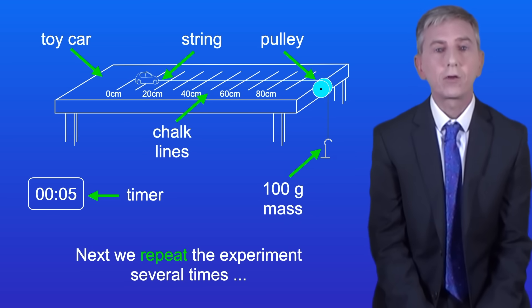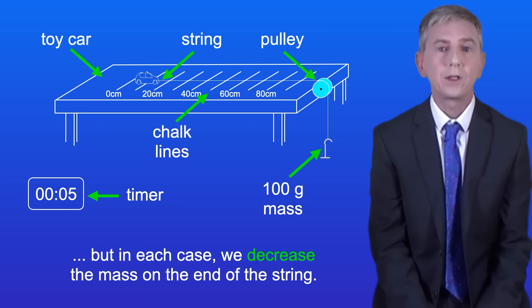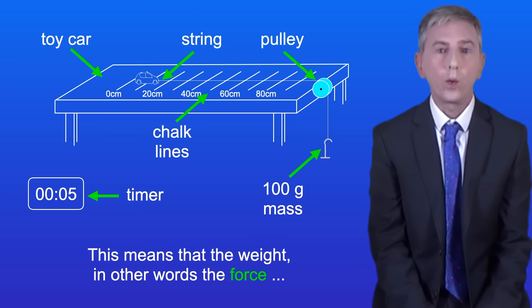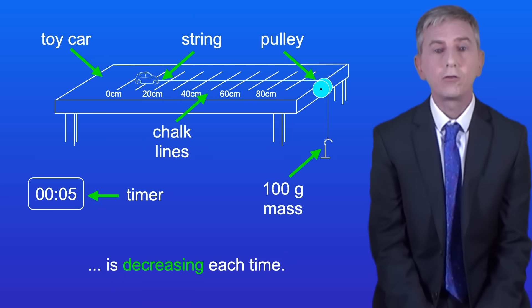Next we repeat the experiment several times but in each case we decrease the mass on the end of the string. For example we could use 80, 60, 40 and 20 grams. This means that the weight, in other words the force, is decreasing each time.